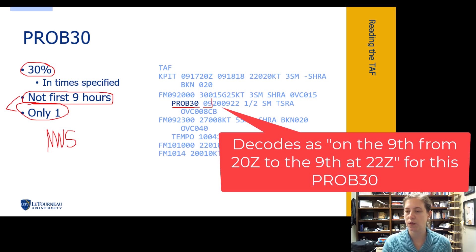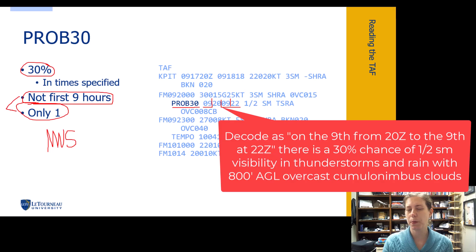So on the ninth, from 20 Zulu to the ninth at 22 Zulu, they are saying a 30% chance of half a mile visibility with thunderstorms and rain and overcast clouds at 800 feet. And these clouds are supposed to be cumulonimbus clouds. Well, that makes sense because we have thunderstorms.